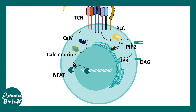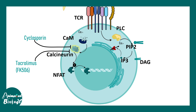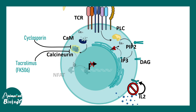This biological process is disrupted by calcineurin inhibitors. Compounds such as cyclosporine or tacrolimus can actually inhibit calcineurin. If calcineurin is inhibited, NFAT cannot move into the nucleus and cannot transcribe the interleukin-2 gene. So the co-stimulatory signal that the T cell was supposed to receive is not received, and T cell activation is halted or compromised.